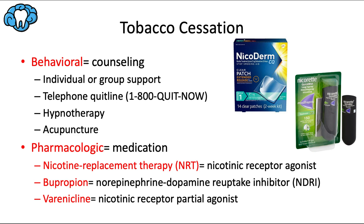A lot of people want to quit smoking, but it's very difficult due to the physiologic dependence that people develop toward tobacco products. Counseling and medication can be used separately, but a combination of the two is most effective. Individual or group support has been shown to improve success. Practical counseling focuses on problem solving and skills training, while cognitive behavioral therapy focuses on managing withdrawal symptoms, cravings, and tempting situations. Counseling over the phone, hypnotherapy, and acupuncture have all shown some evidence of efficacy as well.